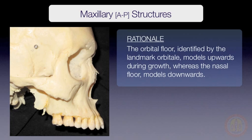Vertically, you will need to focus on the orbital floor and the nasal floor. Orbitale, which is approximately where the lateral contours of the orbits and the orbital floor meet, normally models upwards over time. In contrast, the nasal floor models downwards with growth. As such, the distance between the orbital and nasal floors increases during growth.